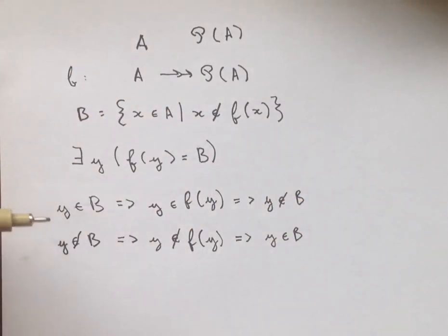So Y is either, if it's in B then it's not in B, if it's not in B then it is in B. And so this is a contradiction for all the way back to the first assumption we made, which was that F existed at all.